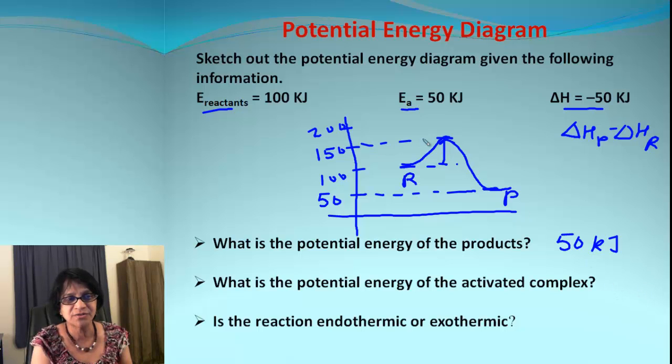The activated complex comes 50 kilojoules above the beginning point, so it is 150 kilojoules. And the reaction, is it endothermic or exothermic? We don't even need to draw the diagram. If you look at the negative sign for delta H, you should know that is an exothermic reaction.